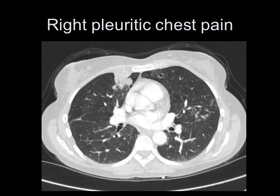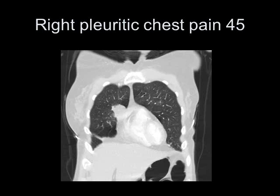Here's a patient with right pleuritic chest pain, an outpatient scanned because of a query tumor. You can see a wedge-shaped, volume-sparing area of opacification in keeping with consolidation, and on the coronal view the volume is maintained. This resolved after antibiotic treatment.